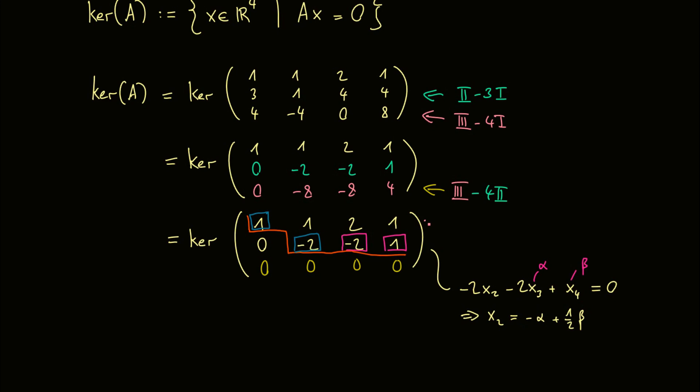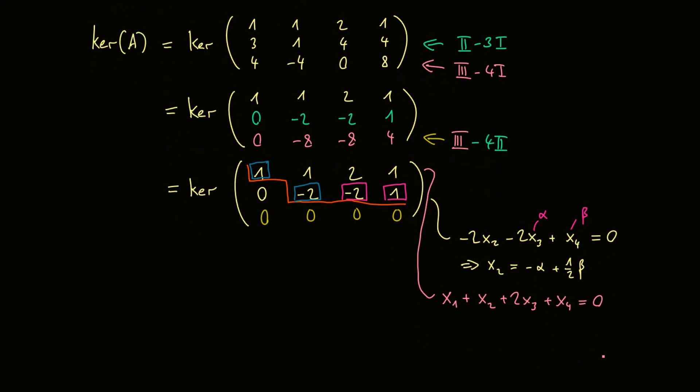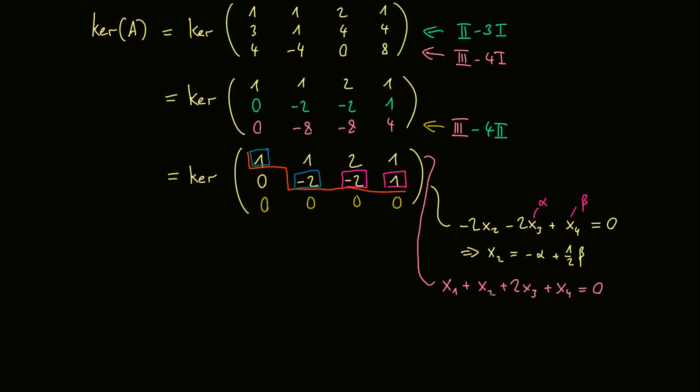And the equation in the first row gives us x1 plus x2 plus 2 times x3 plus x4 equals 0. But we already know that we can write x2 as minus alpha plus 1 half beta. We know that this here is just 2 times alpha, and this is just beta. So we can write x1 also in terms of alpha and beta, and this is just minus alpha, so 2 alpha minus 1, and minus 3 half beta.